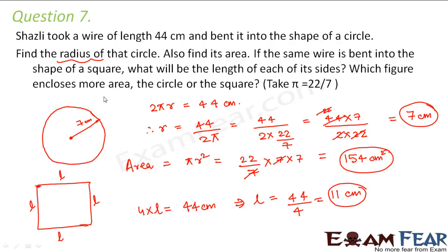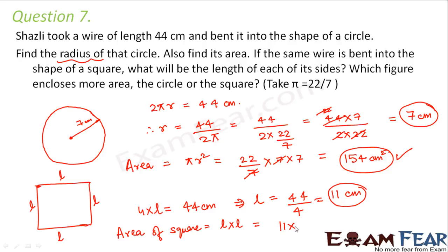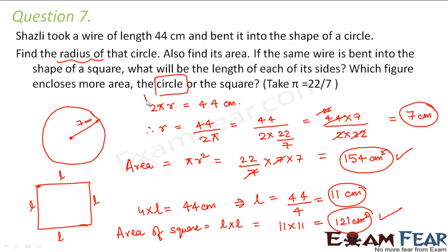Which figure encloses more area — the circle or the square? The area of the circle is 154 centimeter square. To compare, we find the area of the square: side × side = 11 × 11 = 121 centimeter square. Comparing 121 with 154, we see that 154 is greater. Therefore, a circle encloses greater area.